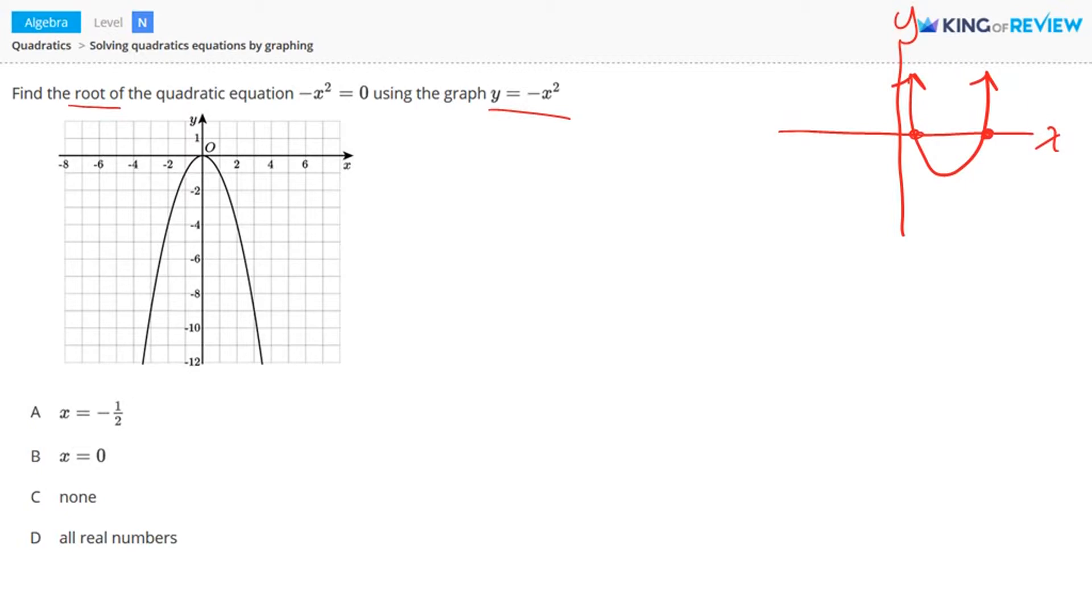So let's look at our graph y equals negative x squared. That forms this parabola here. So where does this graph cross or touch the x-axis? Well, it touches right here at x equals zero. So it has one root and that root is at x equals zero. So letter b.